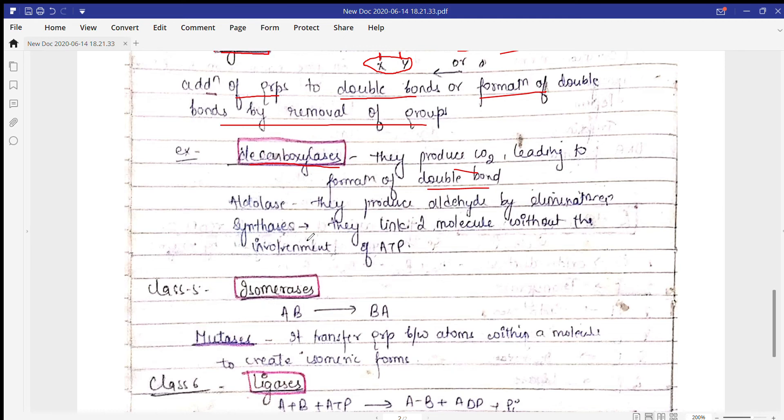Aldolases are another example. In glycolysis, when fructose-1,6-bisphosphate converts into two products—DHAP and phosphoglyceraldehyde—aldolase is used to break the bond between the six-carbon molecule and form two substrate molecules. Synthases link two molecules without the involvement of ATP, so ATP is not utilized in the reaction.